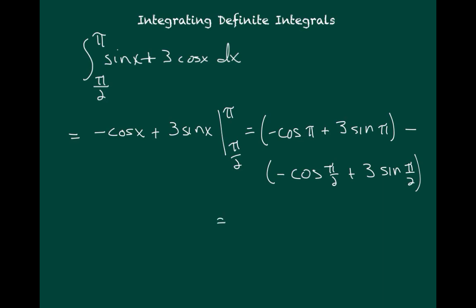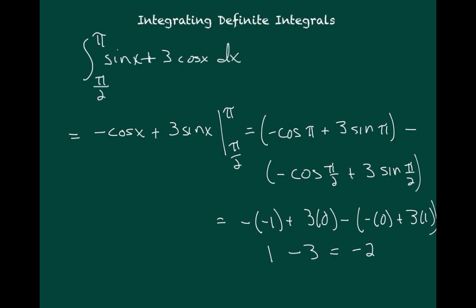To get our final answer, we evaluate each term. If you know your first-quadrant trig values, this isn't hard. Negative cosine of pi is negative of negative 1, which is 1; plus 3 times sine of pi, which is 3 times 0; minus negative cosine of pi over 2, which is negative of 0; plus 3 times sine of pi over 2, which is 3 times 1. So we get 1 minus 3, which equals negative 2. That means the antiderivative — negative cosine x plus 3 sine x — changed by negative 2 units over that interval.